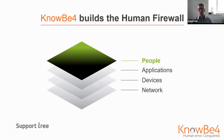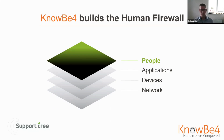In simple terms, what KnowBefore does is it builds a human firewall in every organization. The main reason why they do that is because technology is only going to be so effective at protecting people. As a distributor, we sell various different solutions covering email security, firewalls, and that kind of thing. And the common thread is that nothing is 100% effective.